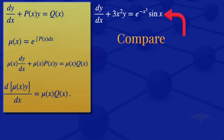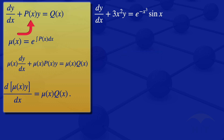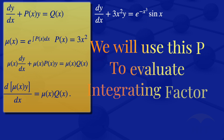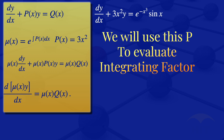Comparing the given equation with the standard form of a linear ODE, we see that P of X is the coefficient of Y. Here the coefficient of Y is 3X squared. So in this case P of X is equals to 3X squared. We will use that P of X to evaluate the integrating factor.